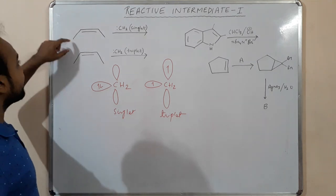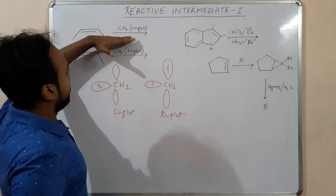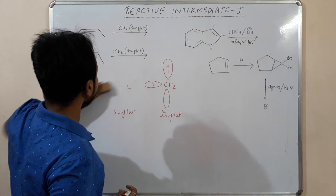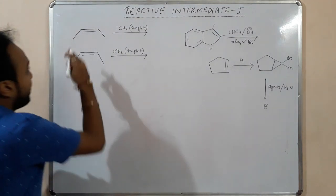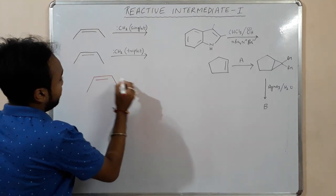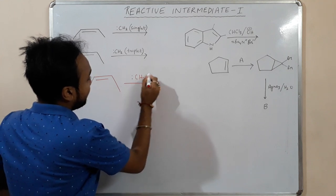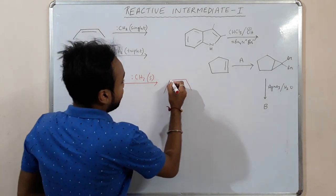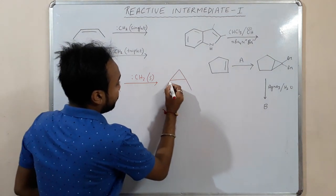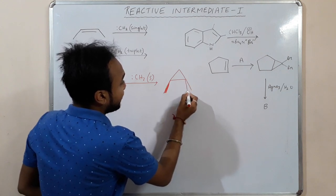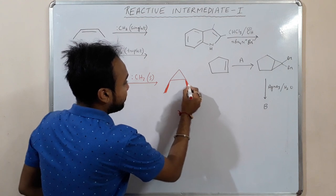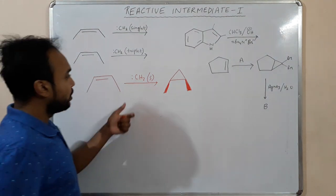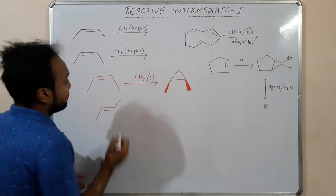We are given a cis alkene along with a singlet carbine and a triplet carbine to see what happens in each reaction. If we add a singlet carbine — I'm writing it as S — to our alkene, a cyclopropane ring will form. Since we are starting with a cis isomer of the alkene, in the presence of singlet carbine we will get a cis isomer of the cyclopropane.